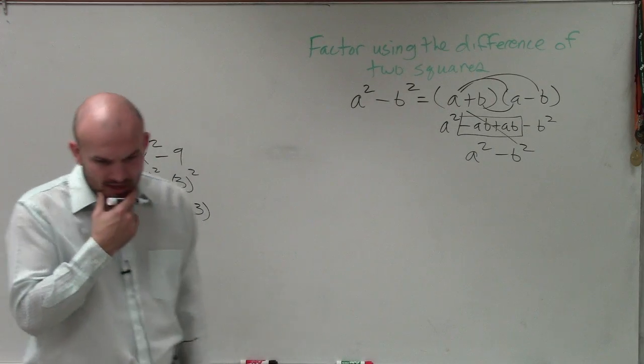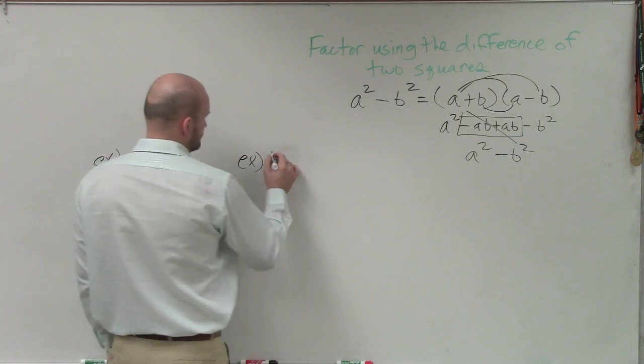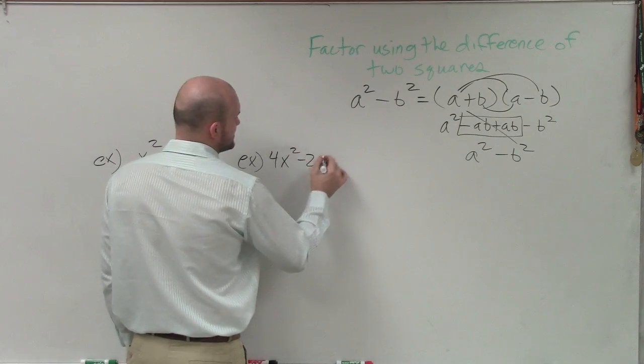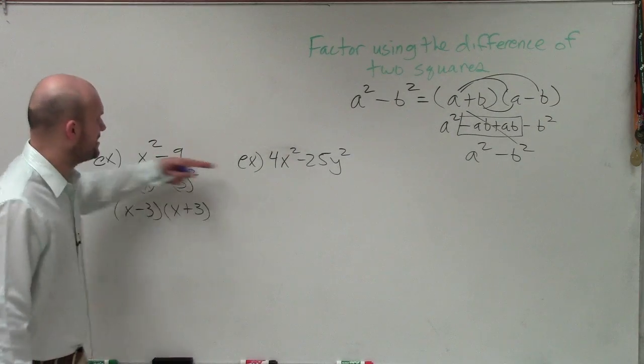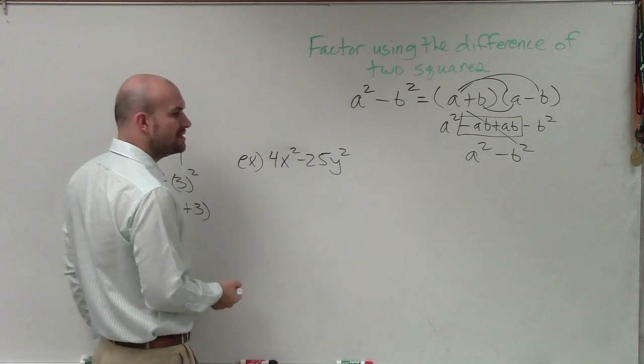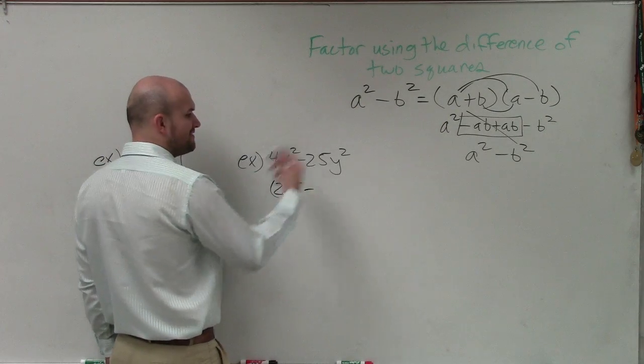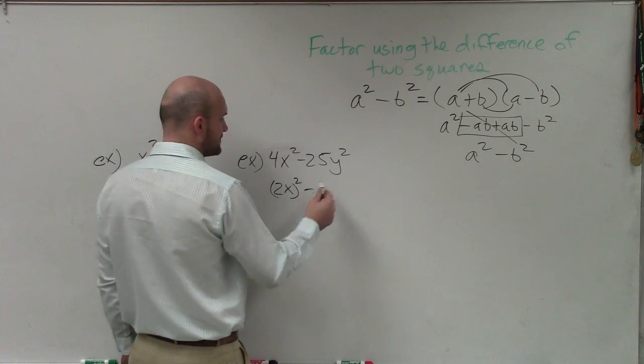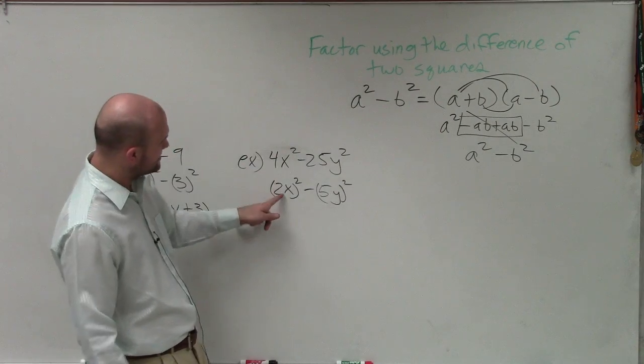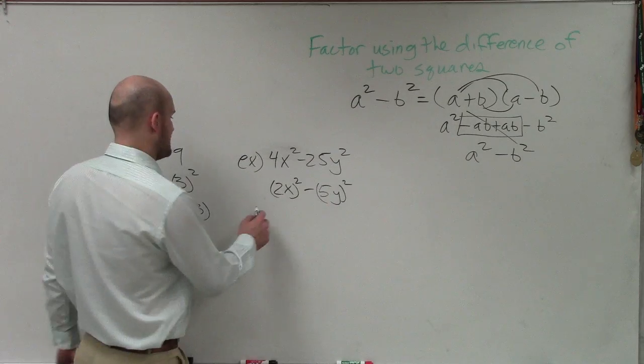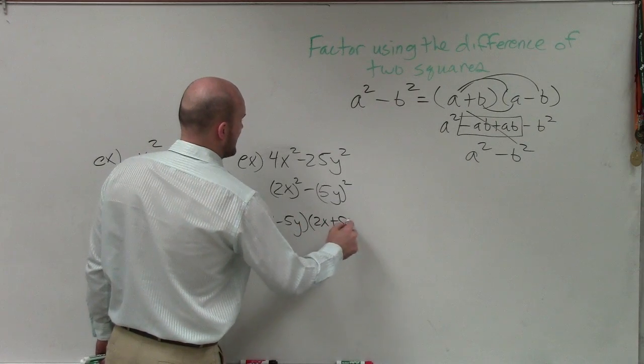Now, a lot of times students will also get confused if we start having some coefficients. So let's say I now have 4x squared minus 25y squared. Well, again, you want to see how can you rewrite this as square terms. 4x squared I can rewrite as 2x squared, and 25y squared I can rewrite as 5y squared. So therefore, my a would be 2x and my b is going to be 5y, so I can rewrite this as 2x minus 5y times 2x plus 5y.